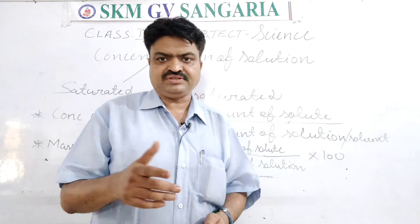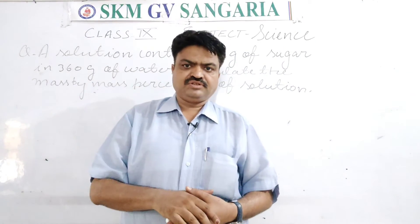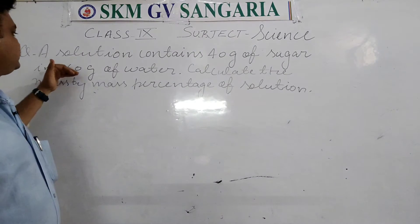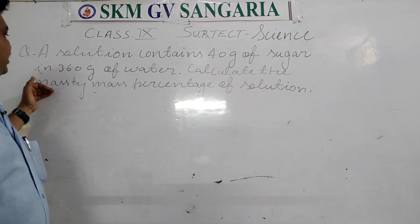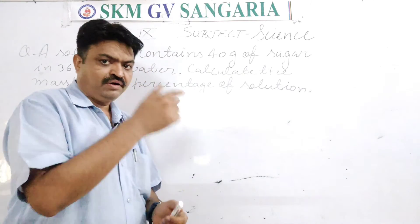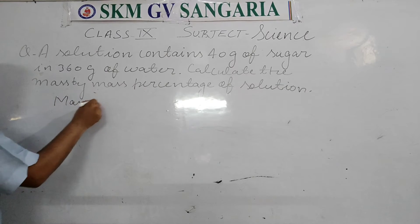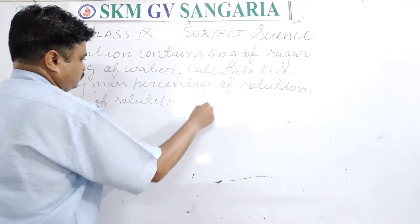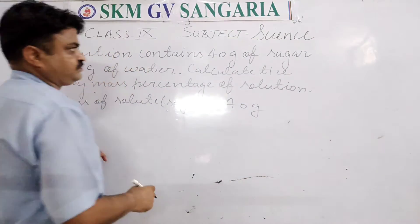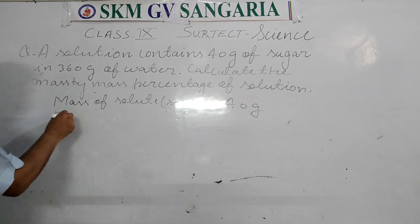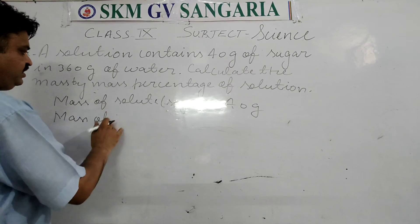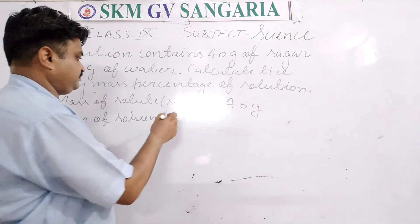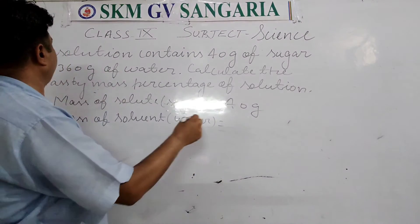Now we will solve a question: a solution contains 40 grams of sugar in 360 grams of water — calculate the mass by mass percentage of solution. From the question, the mass of solute (sugar) is 40 grams, and the mass of solvent (water) is 360 grams.